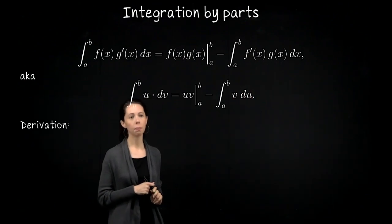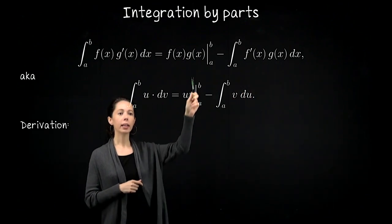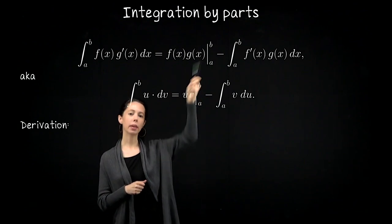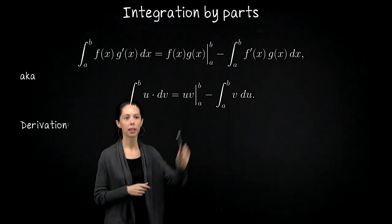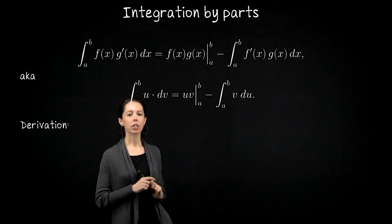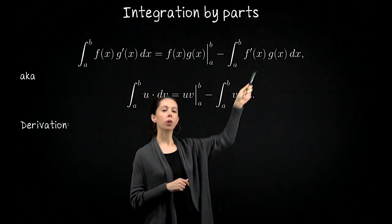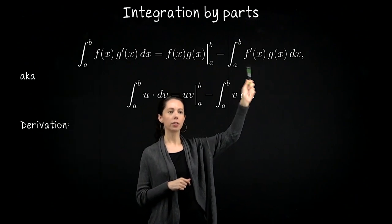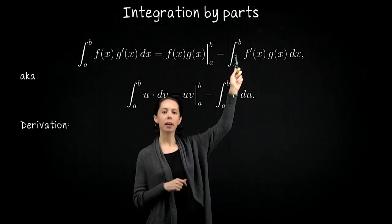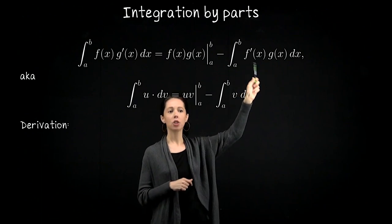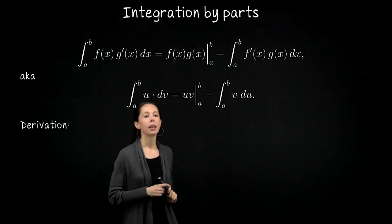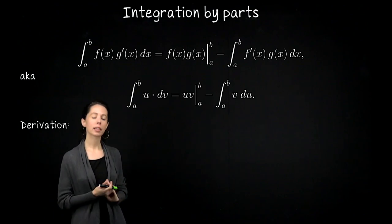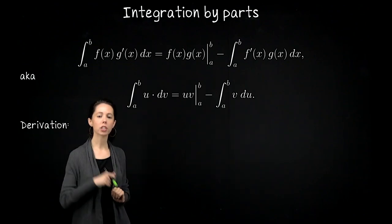This is the expression for a definite integral. You would write it as the product of f of x times g of x evaluated at a and b according to the fundamental theorem of calculus — so there's no integration left here — minus an integral from a to b of f prime of x times g of x dx. That's the statement of integration by parts, and I'll show where this expression comes from in just a second.